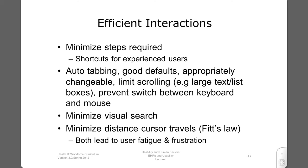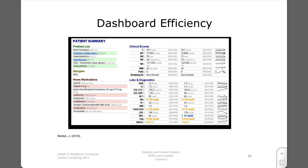Fitts' law is a discovery of human movement that the time taken to hit a target is proportional to its distance and inversely proportional to its size. This is an example of an efficiently arranged interface. Note the clear separation of sections, graphical display of data as sparklines at the right which show trends, clear type at appropriate density, bold and grayed-out sections of text for important and less important data, and use of color.